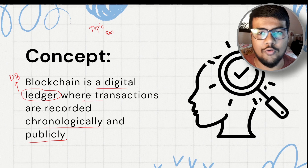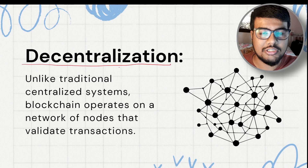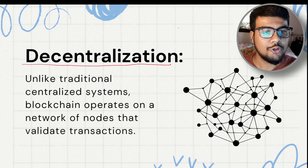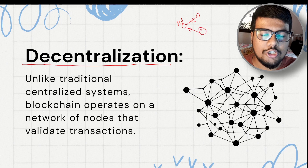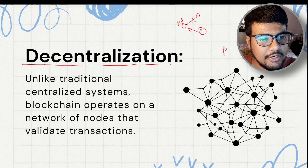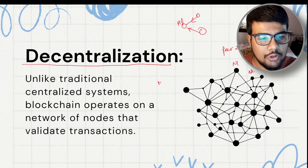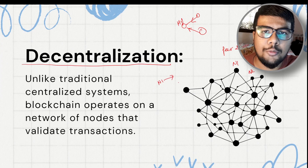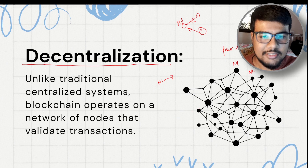Decentralization is a key concept in blockchain. You may have heard of centralized control, where a master node is connected to many slave nodes and only the master node handles requests. In blockchain, we have a peer-to-peer system where each node — say node 1 and node 2 — is connected to every other node in the network. If node 1 requests information, any node can respond.